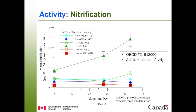For nitrification, we added alfalfa as a source of ammonia to the soil and incubated for just over 40 days, then measured the amount of nitrate and nitrite produced. The reference OFOH had the highest amount of nitrate and nitrite, whereas both the contaminated horizons and the reference AHG were not significantly different from the autoclave soil.